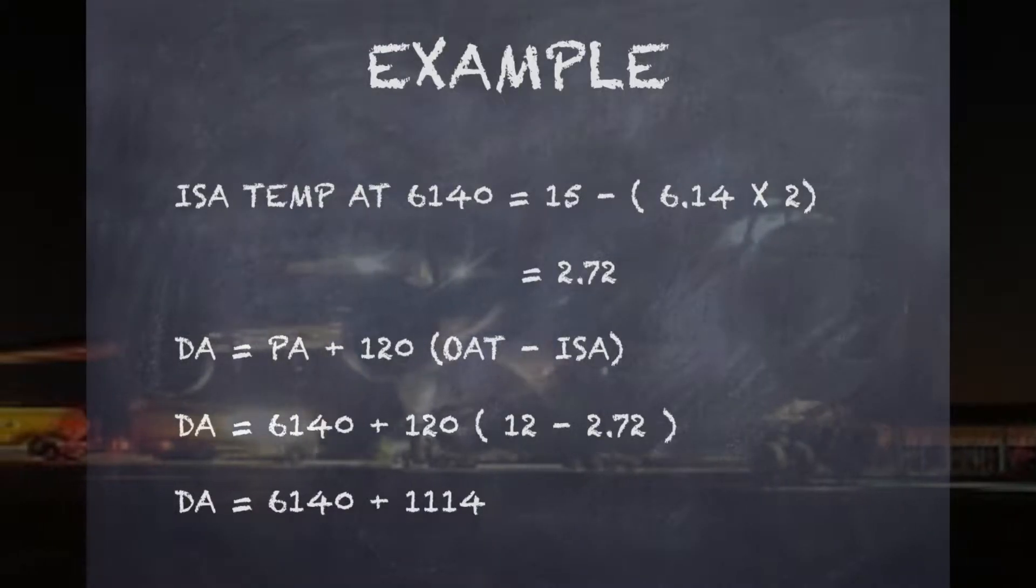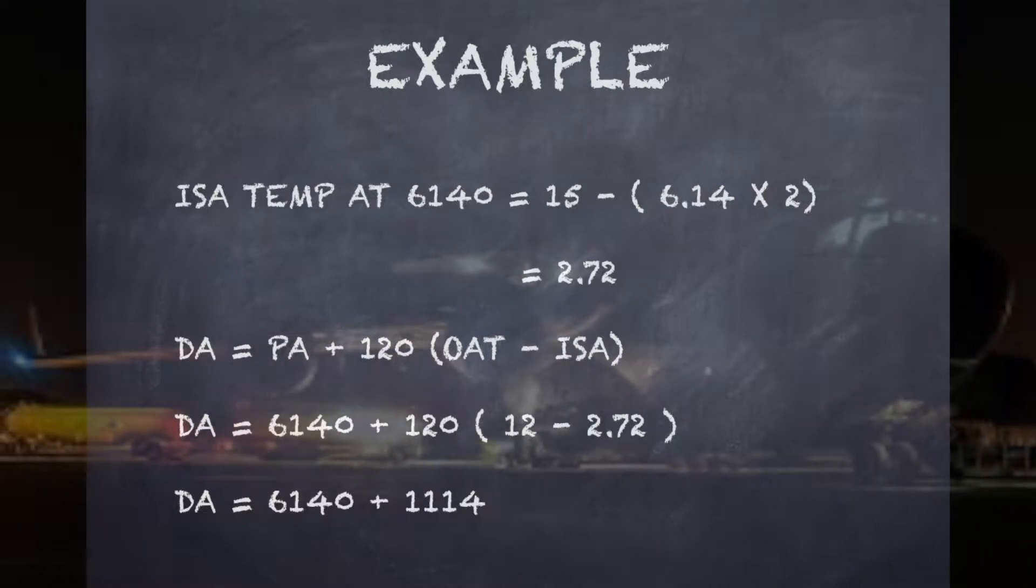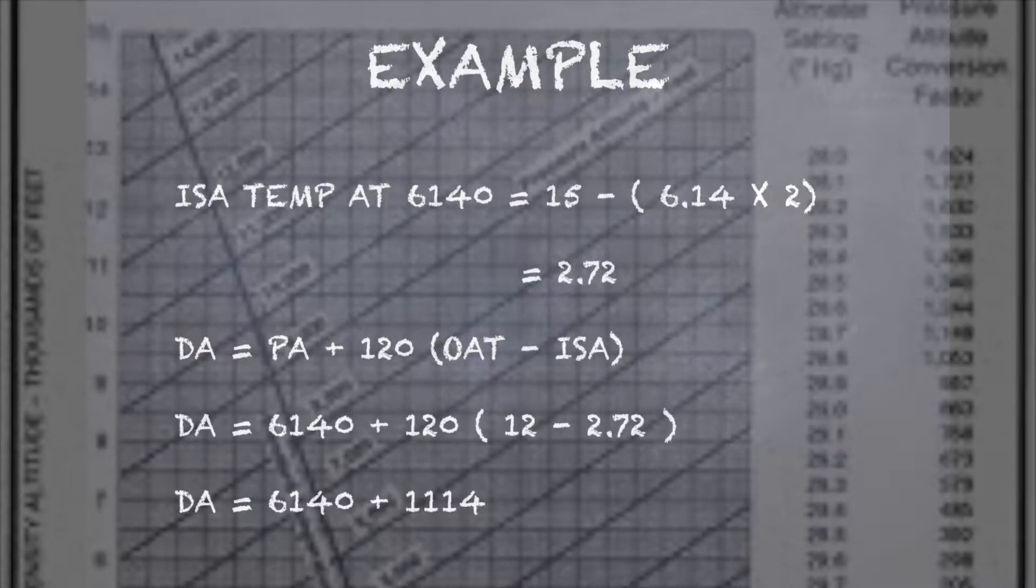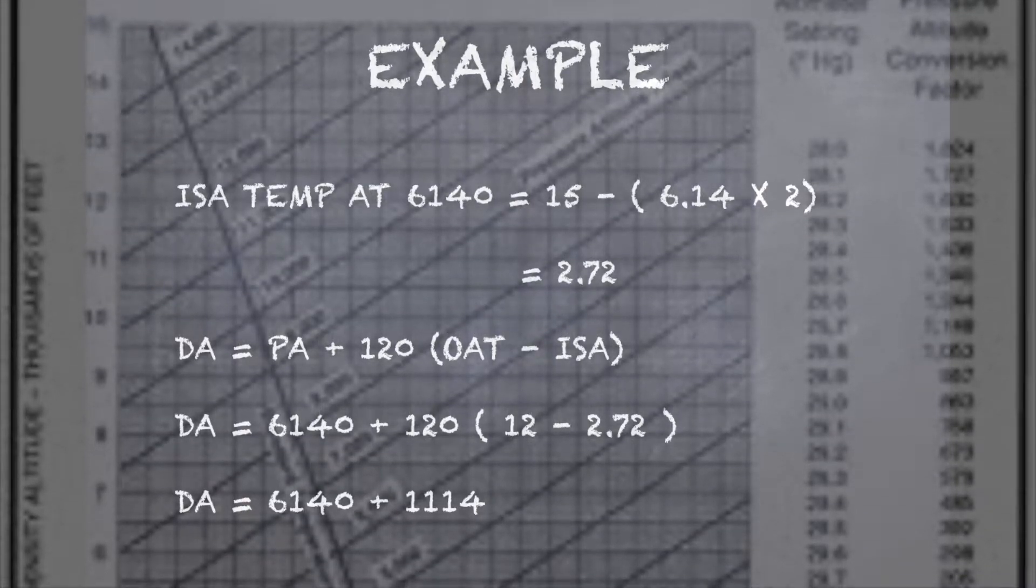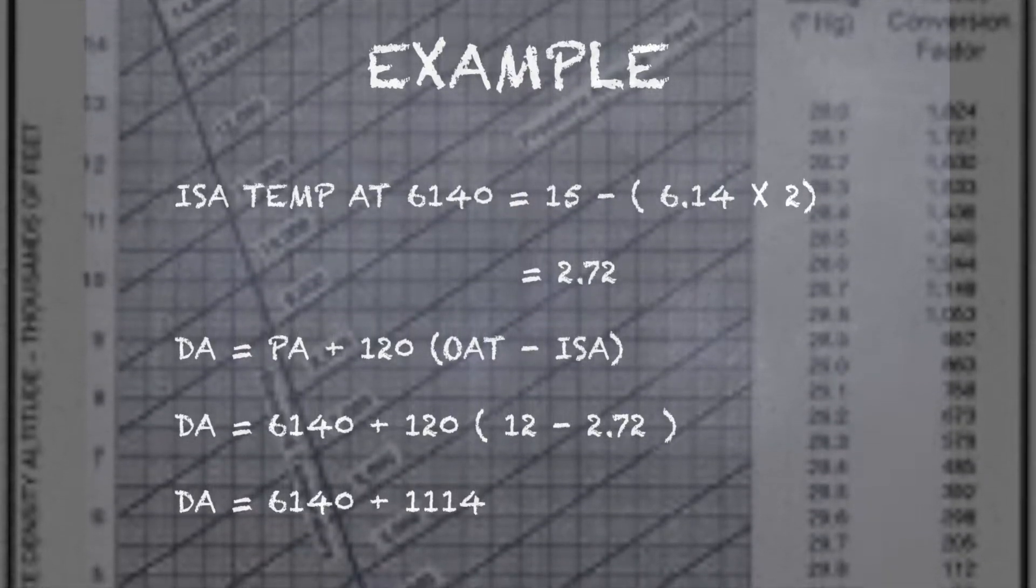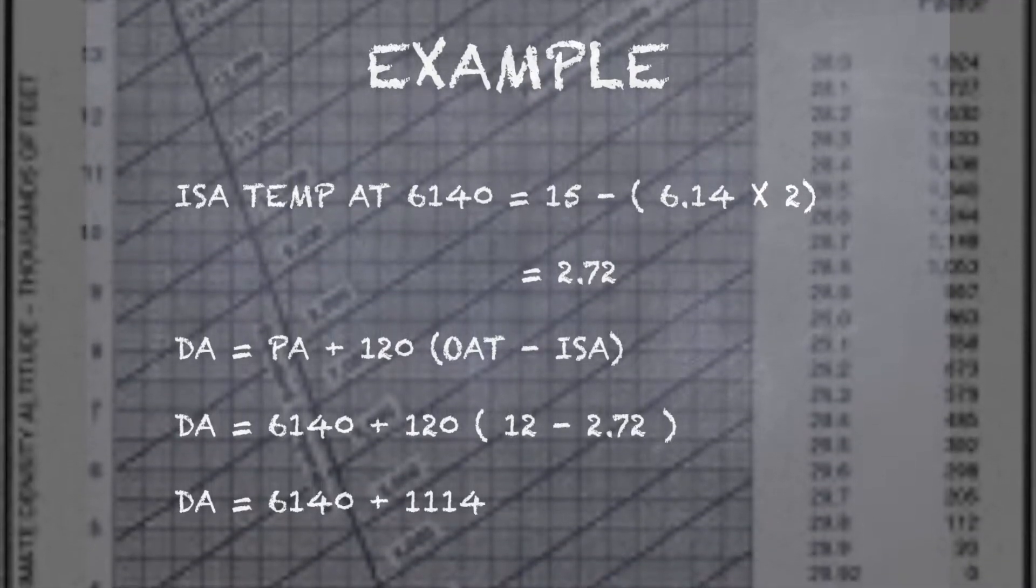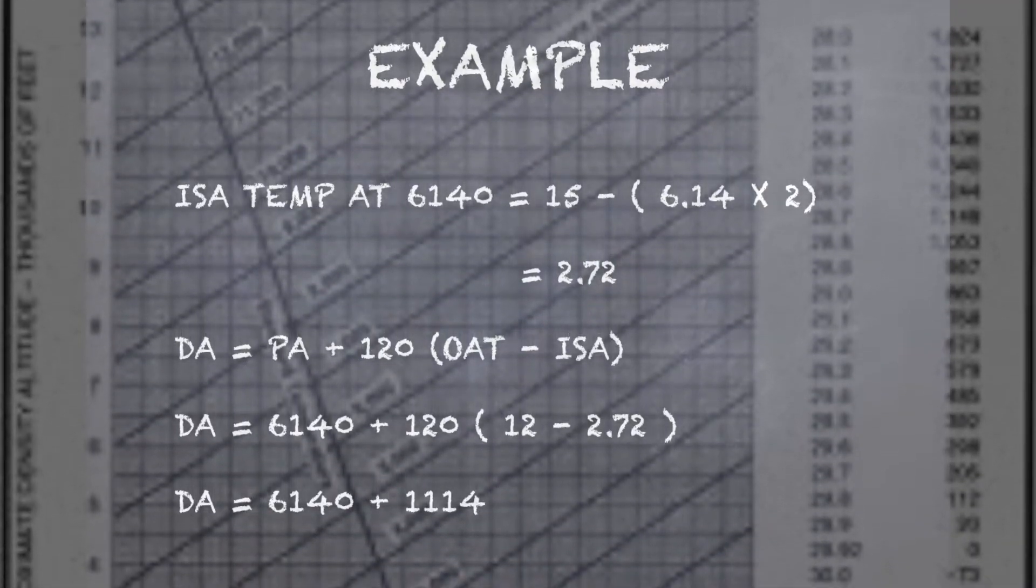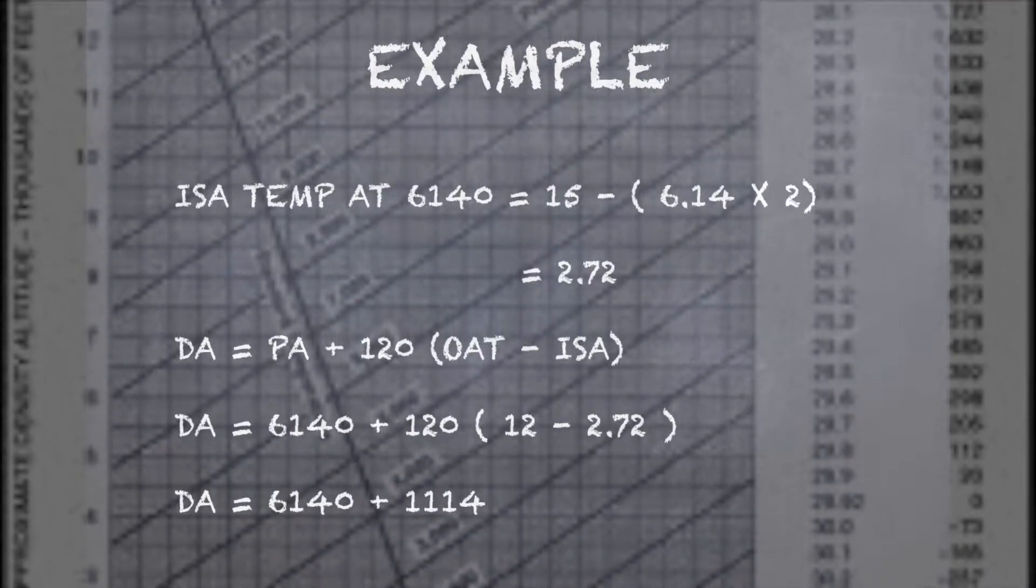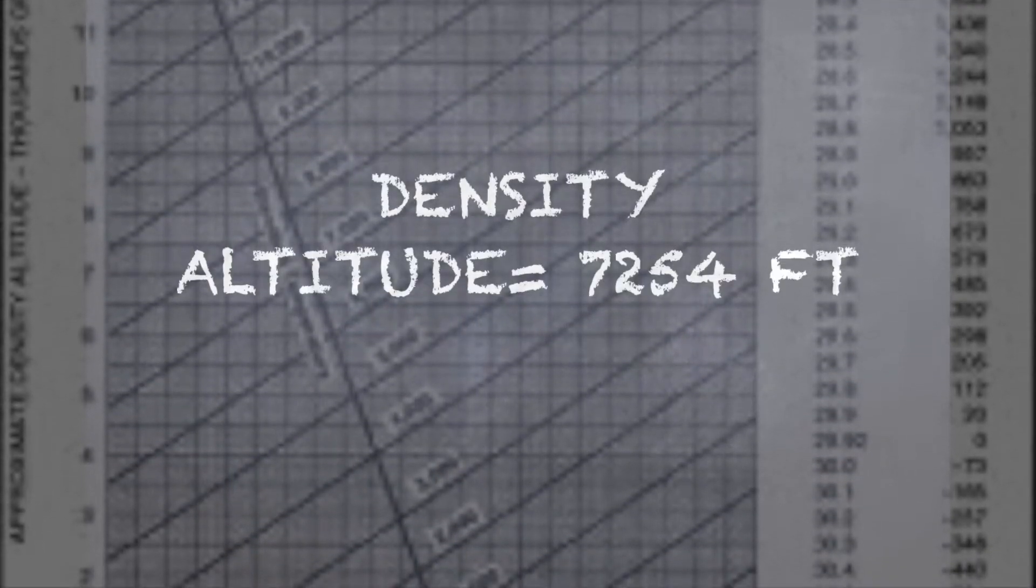Now I need to find out ISA temperature at 6140. 15 minus pressure altitude by 1000 times 2 comes to be 6.14 times 2, that is 12.28, so 15 minus 12.28 equals 2.72. Density altitude equals pressure altitude plus 120 times OAT minus ISA, which comes to be 6140 plus 120 times 12 minus 2.72, so 6140 plus 1114, which comes to be 7254.